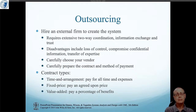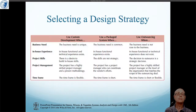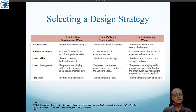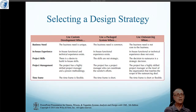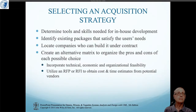You may have to agree on a fixed price contract, or sometimes give the vendor a cut of whatever you're trying to make. There's a comparison where the left-hand side shows the criteria and the three columns show the three different ways of doing it: custom development, buying a package system, or outsourcing the development.